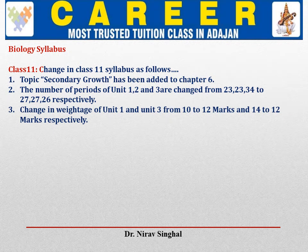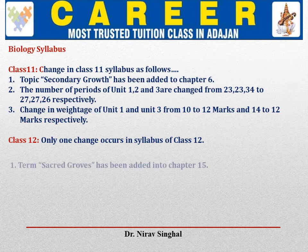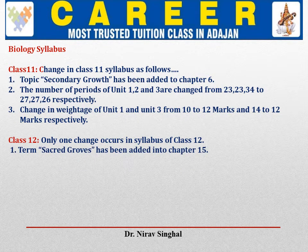There is also a change in the weightage of Unit 1 and Unit 3. Unit 1 was previously 10 marks and is now 12 marks, whereas Unit 3 was initially 14 marks and is now 12 marks for 2020-21. Moving to standard 12, there is only one minor change in the Biology syllabus — the new term Sacred Groups has been added into Chapter 15. Rest of the syllabus remains as it is.